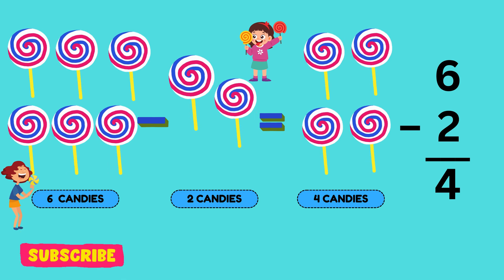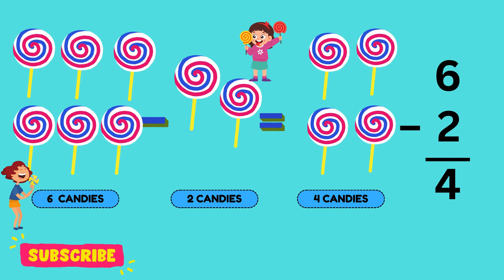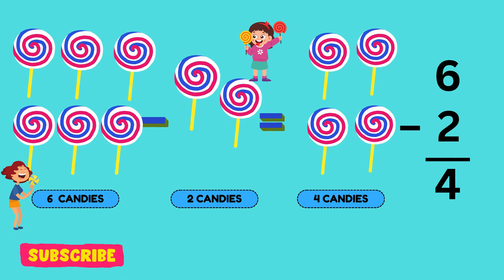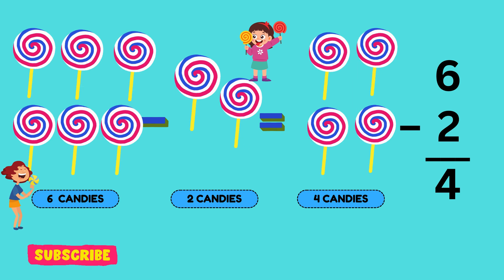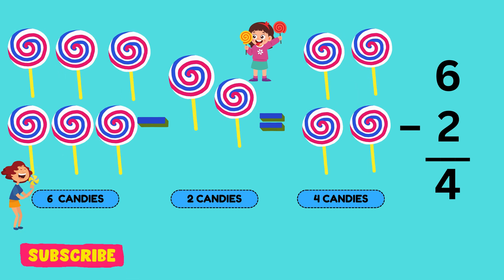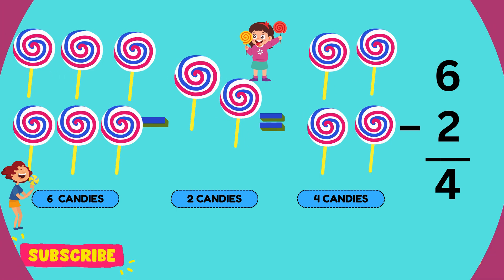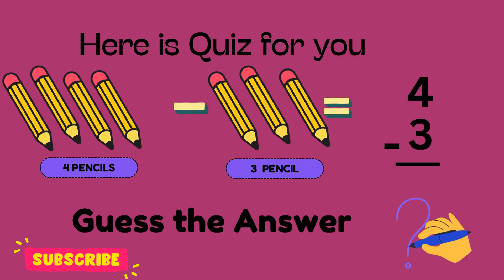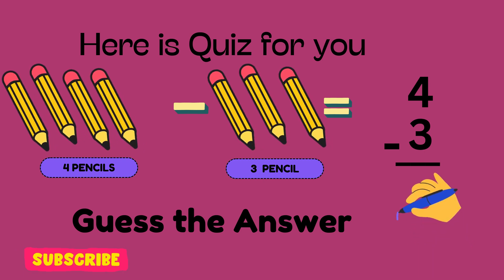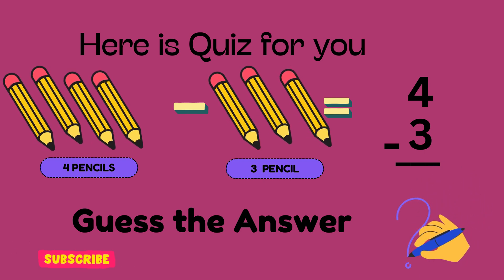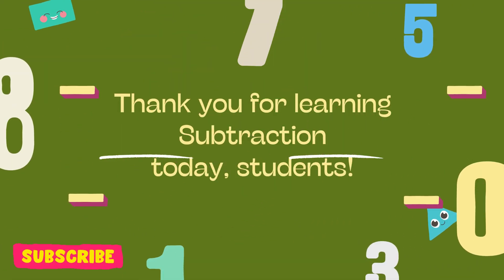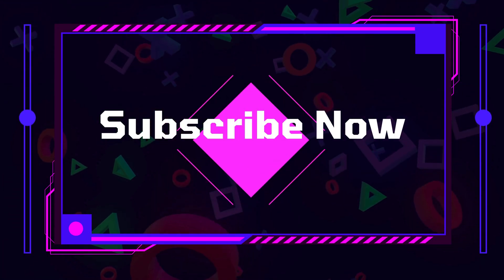I have six candies. I gave two candies to Lily. Let's count how many candies I have now. I have four candies.